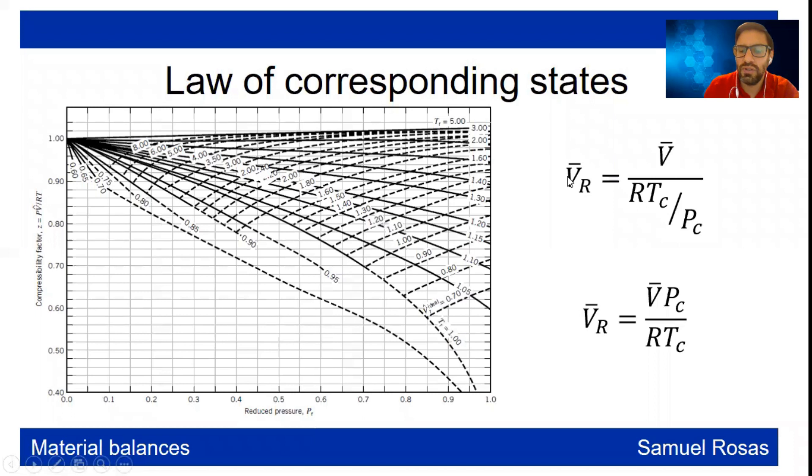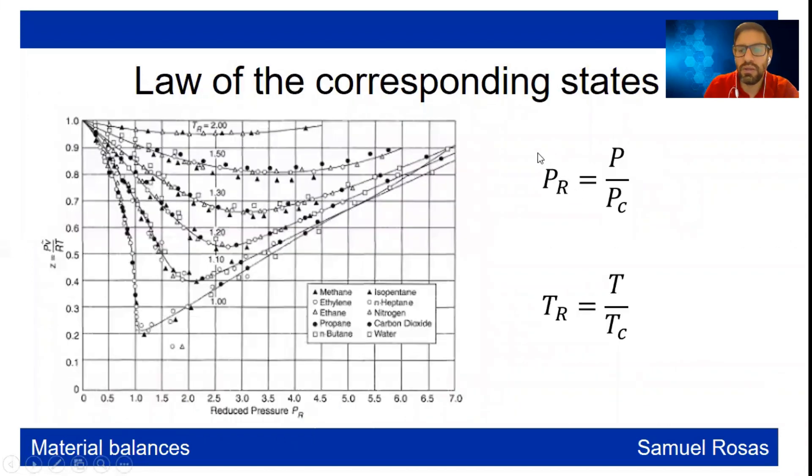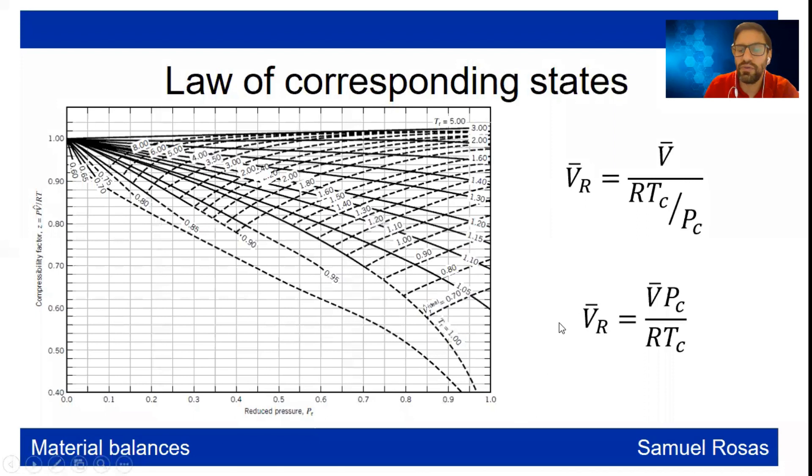Now these factors, what we call here the reduced pressure, the reduced temperature, and the pseudo-reduced volume or molar volume, they are dimensionless. They don't have units. So you have to input R in such terms that these will go dimensionless. And it's exactly the same.